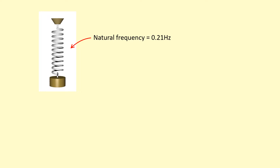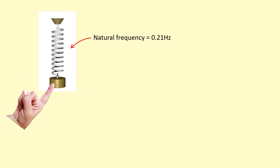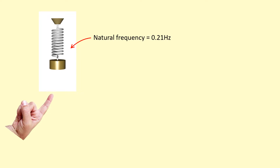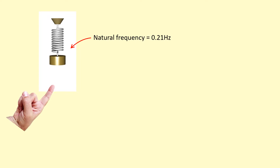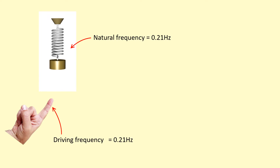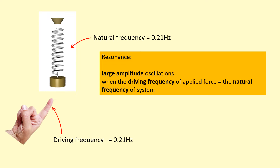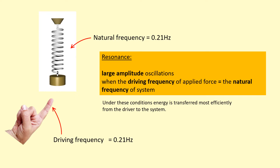Here we have a mass-spring system oscillating at a natural frequency of 0.21 hertz. If I push it at a very low driving frequency, it will oscillate with a small amplitude, and if I push at a very high frequency, the amplitude won't be that large either. But if I push at a frequency equal to the natural frequency — 0.21 hertz — that's when I get the largest possible amplitude oscillations. This effect is known as resonance, where you get large amplitude oscillations when the driving frequency equals the natural frequency of the system, because this is when you get the most efficient energy transfer from the driving object to the system.